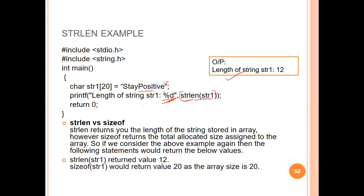Now we have the sizeof operator. There is a difference between strlen and sizeof. strlen returns the number of characters in the string, while sizeof returns the total allocated size of the array in bytes. For example, if str1 is declared with size 20, sizeof(str1) returns 20 because each character occupies one byte, so 20 bytes total.